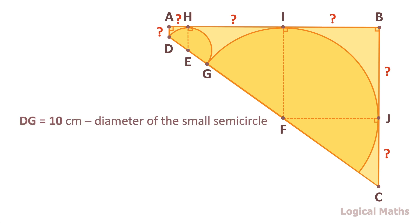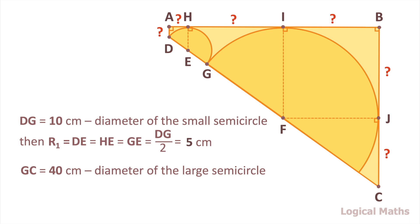It's known that diameter of the small semicircle is 10 cm. So the radius is 5. Mark it as R1. Diameter of the large semicircle is 40 cm. So the radius is 20. Mark it as R2.